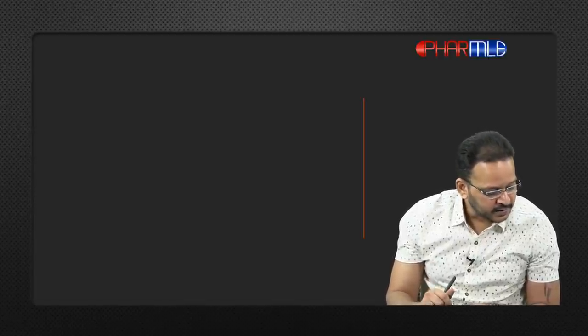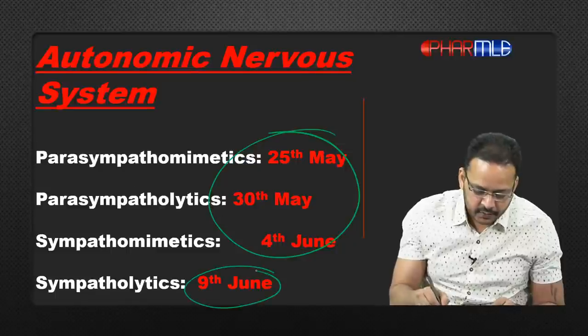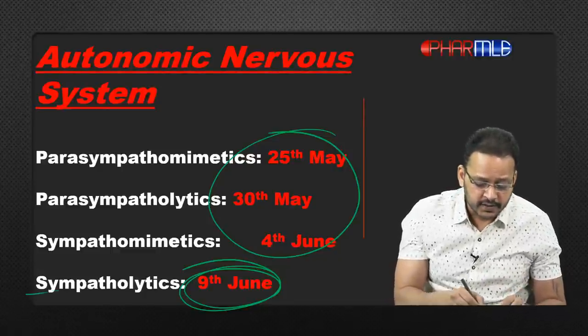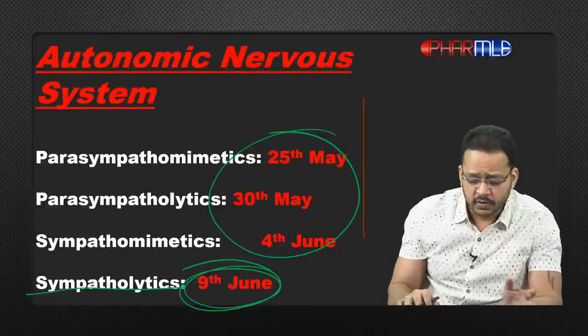VLABA stands for very long acting beta-2 agonist. Why propranolol is used in thyroid storm I will discuss in the next session on beta blockers. That is all we had to discuss today. We have finished sympathomimetics — we are left with sympatholytics. In the next 4 days, we will be done with autonomic nervous system. Study well, study hard, and I'll see you next time with sympatholytics. Take care, bye bye, good night.